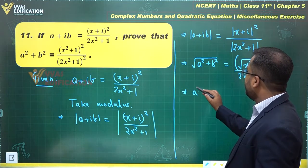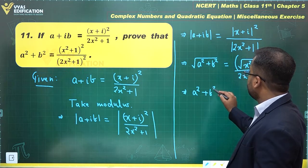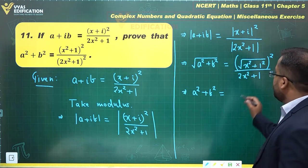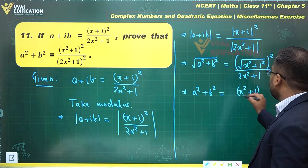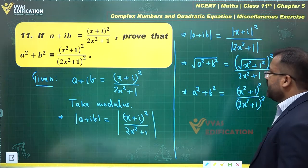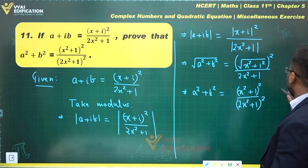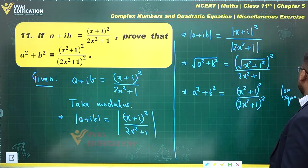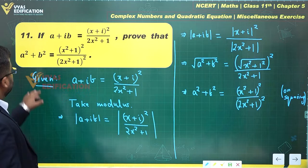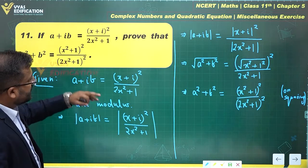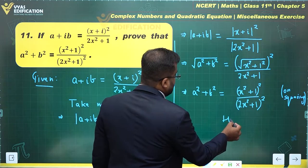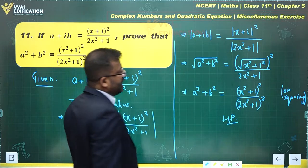Now squaring both sides, we get a square plus b square equals x square plus 1 whole square divided by 2x square plus 1 whole square. And looking at what was asked, we were asked to prove a square plus b square equals x square plus 1 whole square over 2x square plus 1 whole square. Yes, we have done exactly that — this is the complete proof of the question.